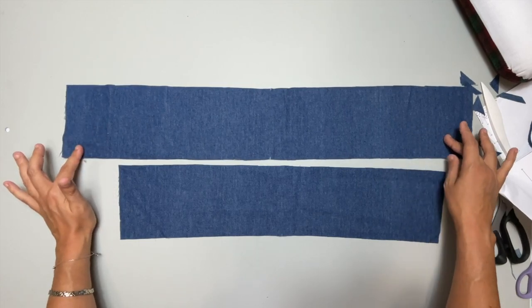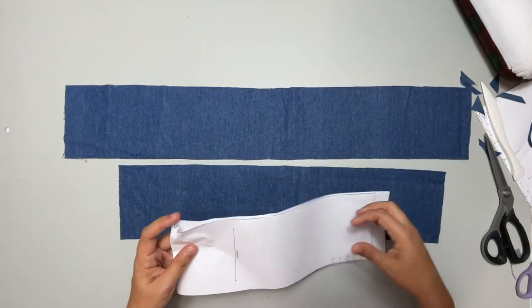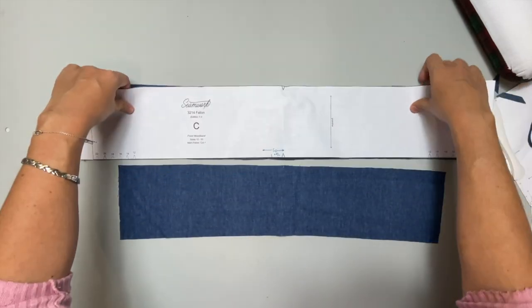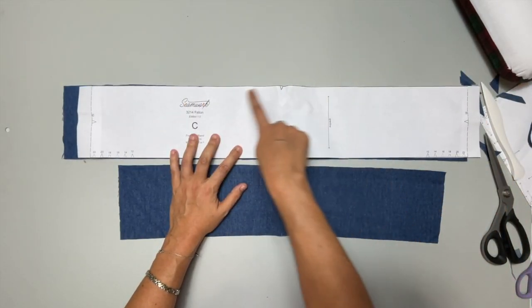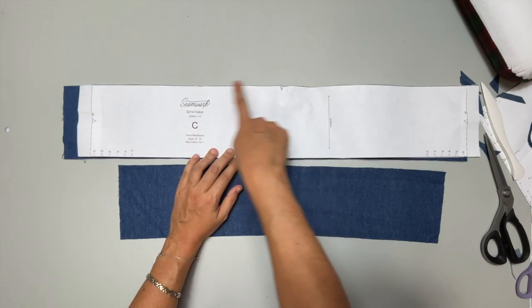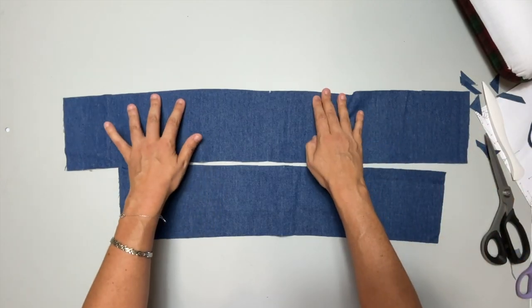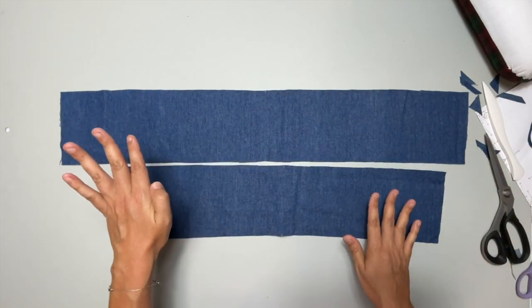On the pattern pieces, there is one long edge that has one notch and then another long edge that has three notches. We're going to find the one with the single notched edge.